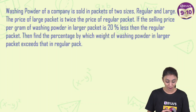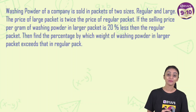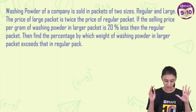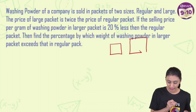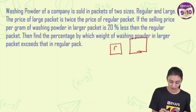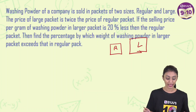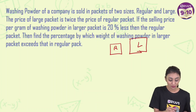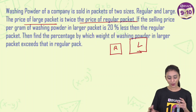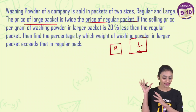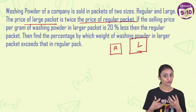So washing powder of a company is sold in packets of two sizes — regular and large. This is the regular one and this is the larger one. The price of the larger packet is twice the price of the regular packet.